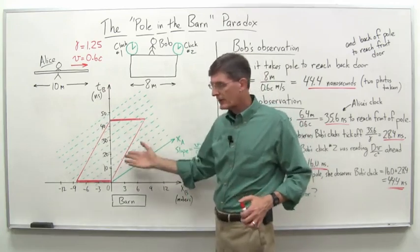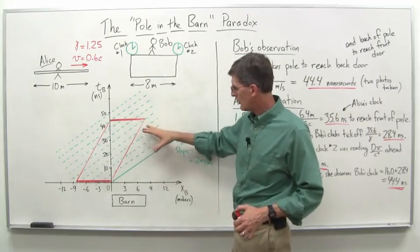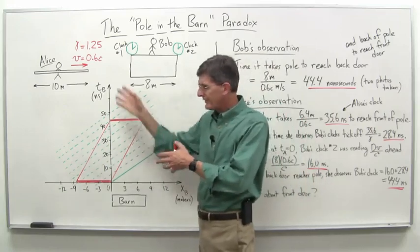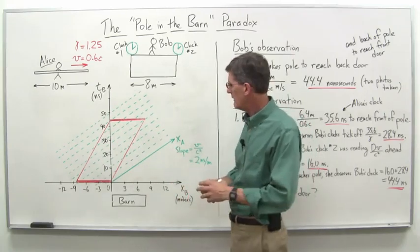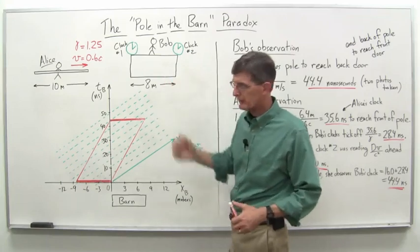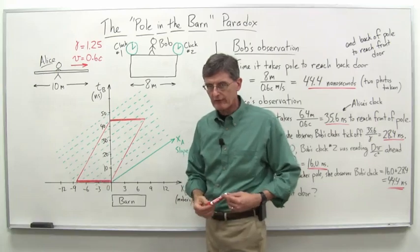Now, if you did a very precise diagram and put both of Alice's axes on here, you could also show that you get the length contraction effect as well in terms of how long she would see the barn being not 8 meters, but actually 6.4 meters there. But again, that gets a little messy in terms of the diagram.